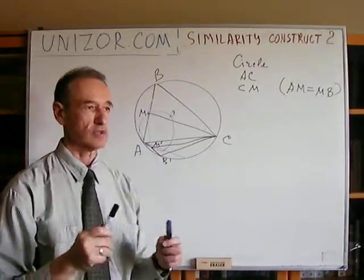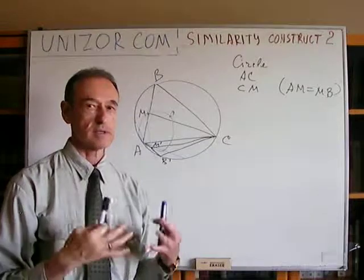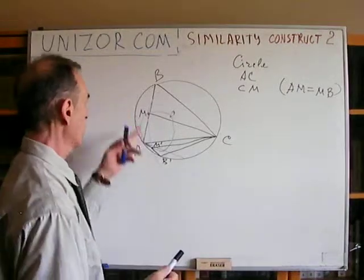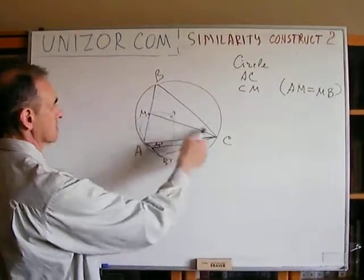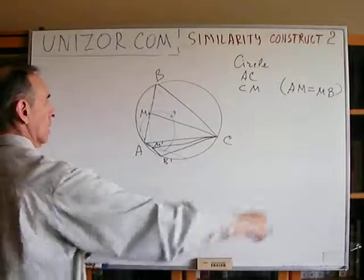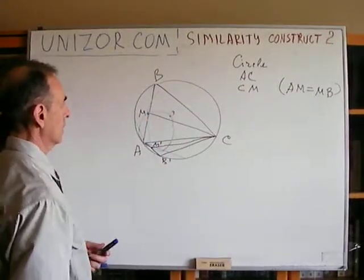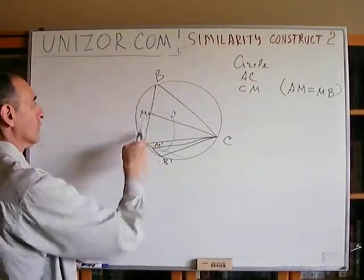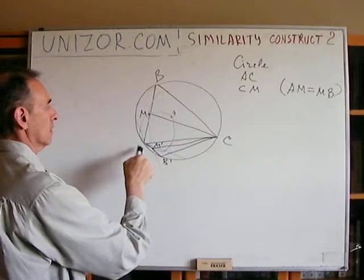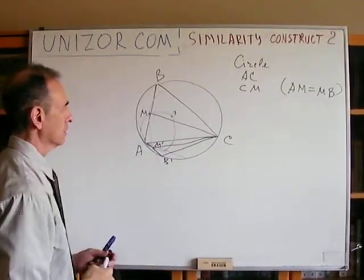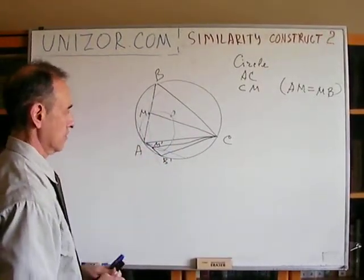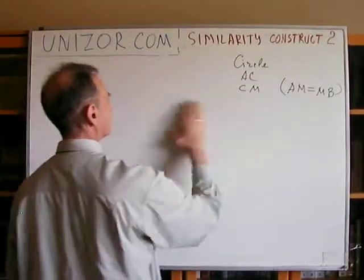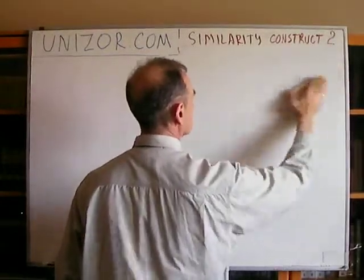The key technique here is finding a point by intersecting two loci: point M must lie on the circle around C of the given radius CM, and it must also be on the circle built on OA as a diameter, since it's the midpoint of a chord from A. The problem is slightly more difficult than the previous one.